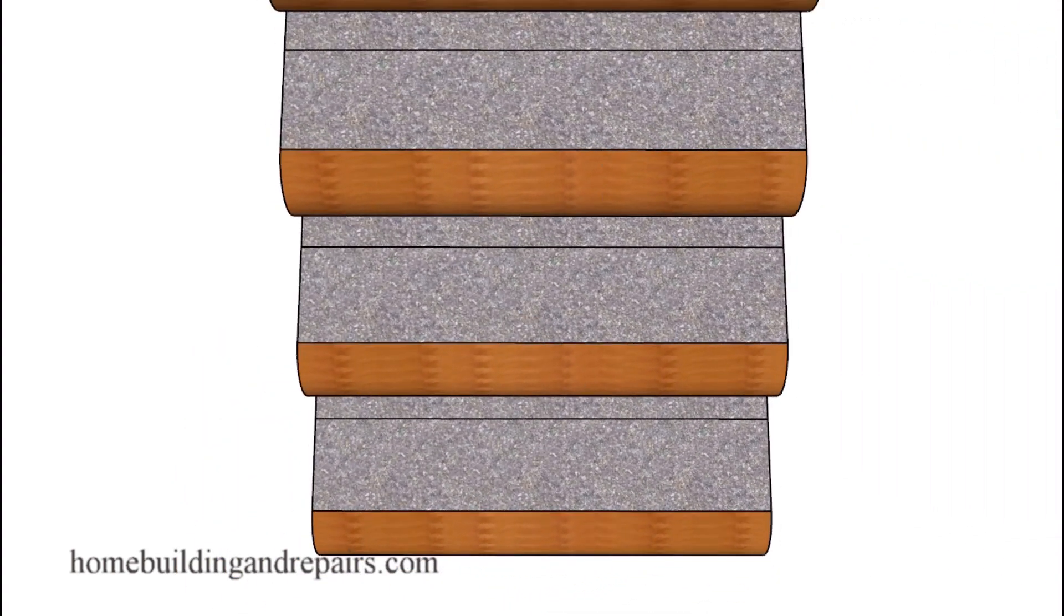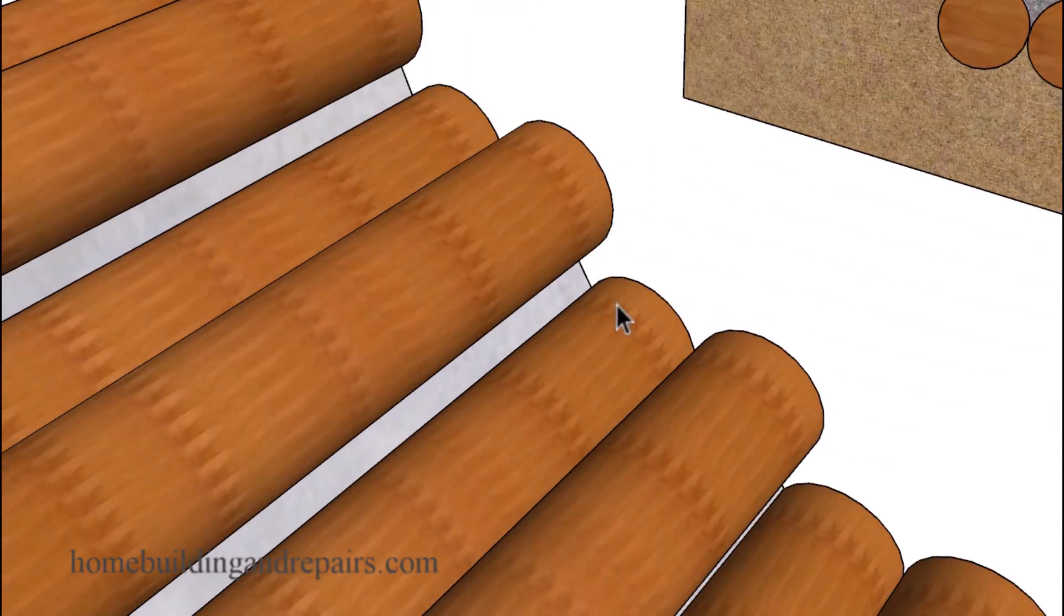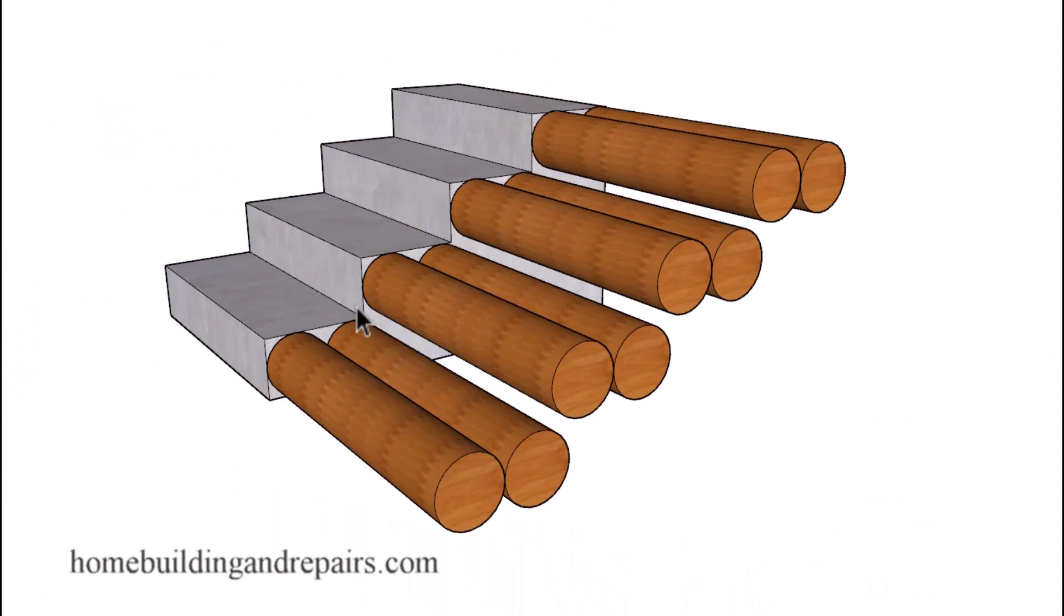And I think the building codes to build something like this could be a little confusing. Because you're still going to be coming off of the farthest section of the upper tread to the farthest section of the lower tread to measure the tread depth, and the same for the riser height. But in reality, you're not going to have the same surface area that you're going to have over here.